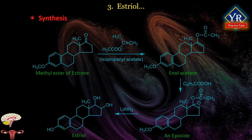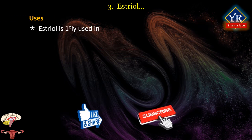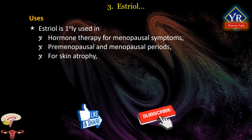Synthesis of Estriol: It is synthesized from the methyl ester of estrone. The methyl ester of estrone reacts with isopropenyl acetate in the presence of p-toluenesulfonic acid to form the corresponding enol acetate. The enol acetate is oxidized to an epoxide using perbenzoic acid. The resulting epoxide undergoes reduction by lithium aluminum hydride to yield estriol. Estriol is primarily used in hormone therapy for menopausal symptoms, in the premenopausal and menopausal periods for skin atrophy and signs of genital degeneration. Though significantly less active than estradiol, it has a selective ability to stimulate blood flow and restoration of genital epithelium.